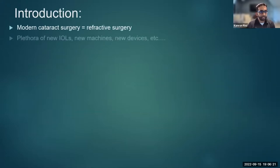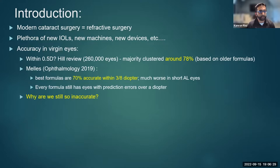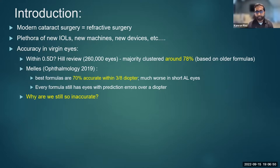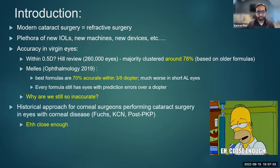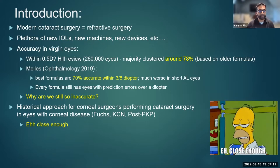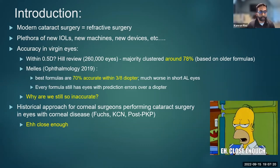Modern cataract surgery is essentially refractive surgery. There's a plethora of new IOLs, new machines, new devices. Yet even in virgin eyes, if we look at accuracy within about half a diopter, we're clustering about 80% with older formulas. Even the best formulas are only about 70% accurate within about three-eighths of a diopter. Every formula still has prediction errors over a diopter. So why are we still so inaccurate even in virgin eyes? This becomes even more of a problem when we talk about patients with concurrent corneal disease. Historically the approach for corneal surgeons has been 'close enough' — just be happy you can see and wear glasses or contacts. But can we do better? Hopefully with new technology and new ideas, we can.